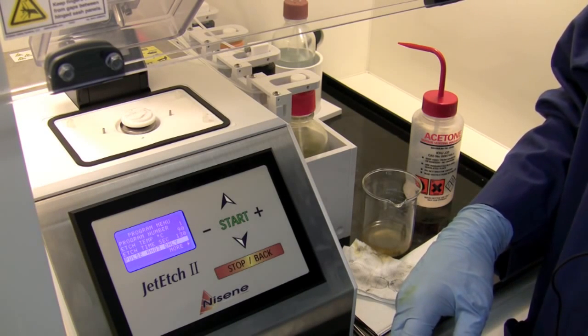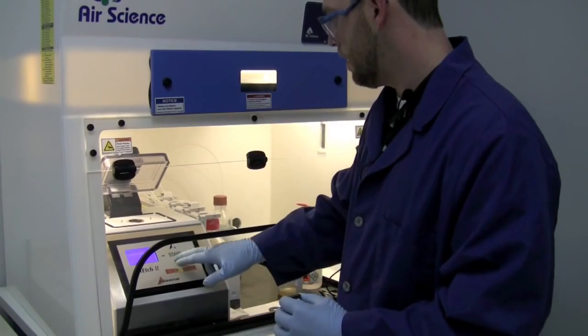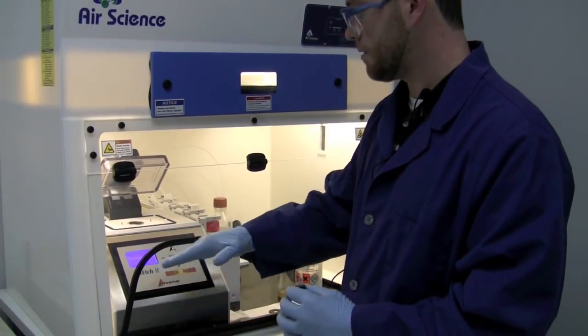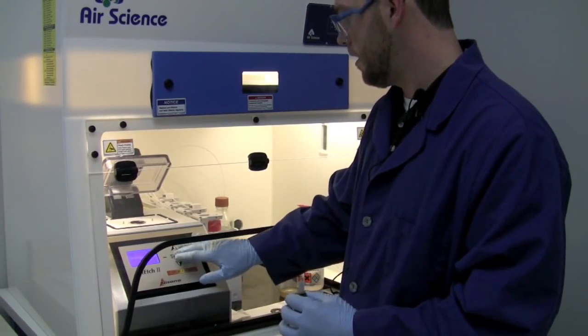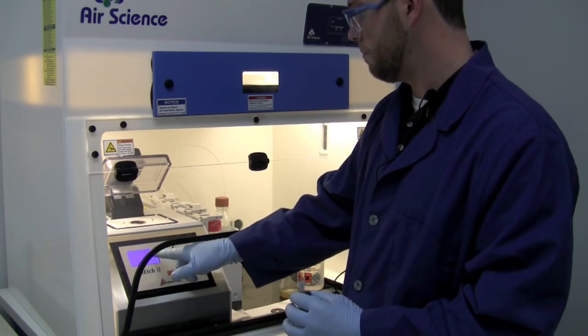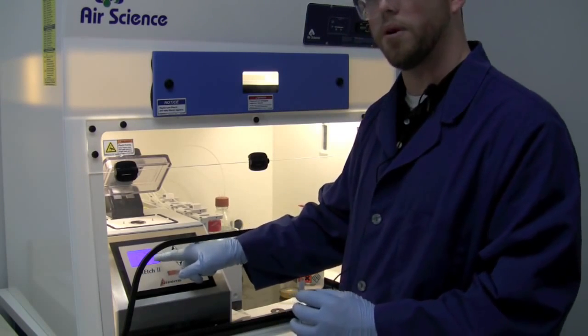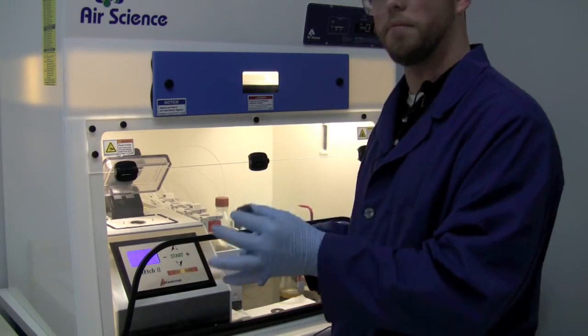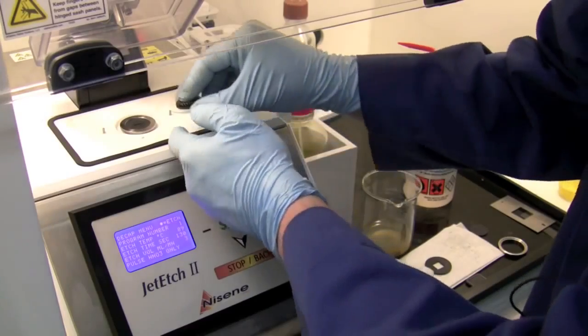Now I'm going to hit start to make sure I save the program, and then I have to scroll down to the decapsulate selection. Right now I'm at the decaps menu screen and it's showing me I've got all my parameters correct, so it's time to put my part and my gasket on the etch head and do the etch.